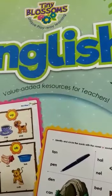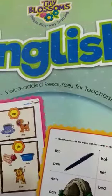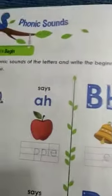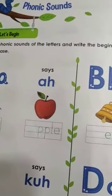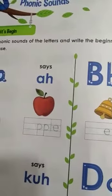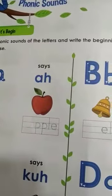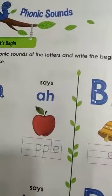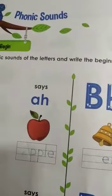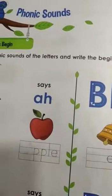Now, today we are going to learn something new. Let us see what it is. We are going to learn phonic sounds. Phonic sounds means each letter from A to Z has a sound. A has a sound, B has a sound — those sounds are called phonic sounds. Today we will learn what sound A represents, what sound B says, like that. That is what you call phonic sound.